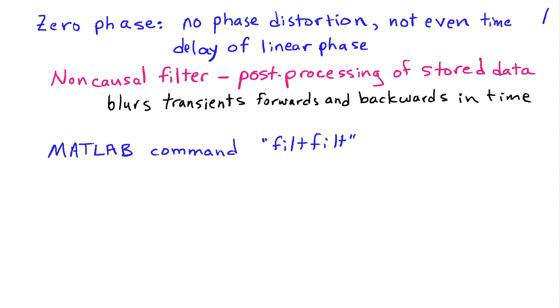However, this results in a non-causal filter, and the only way to do such zero phase filtering is if you have stored data and you can post-process it. If the data is being collected in real time and you want to filter it while it's being collected, then it's impossible to do this zero phase filtering, and the best one can do is linear phase.